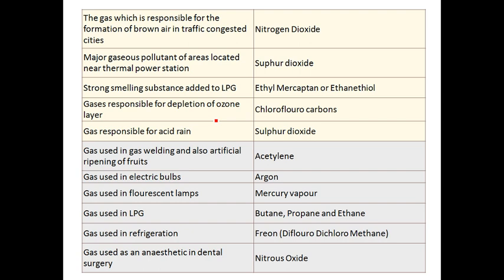The gas responsible for the formation of brown air in traffic-congested cities is nitrogen dioxide. The increase in nitrogen dioxide causes brown air formation.